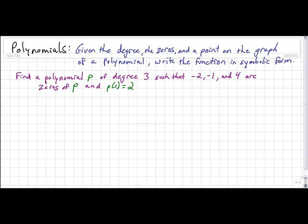Here we're asked to find a polynomial P of degree 3 such that -2, -1, and 4 are all zeros of P, and P(1) = 2.